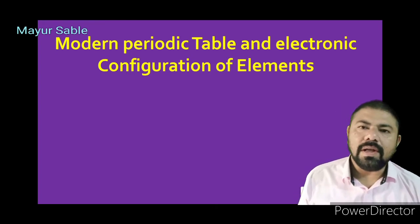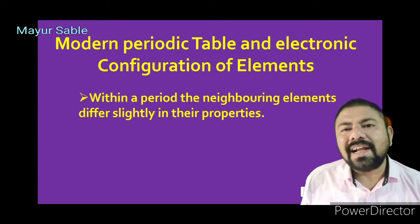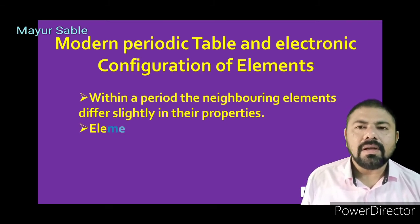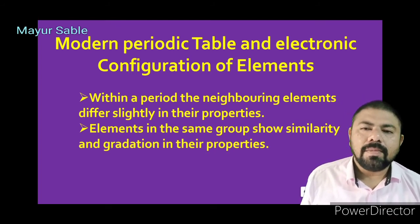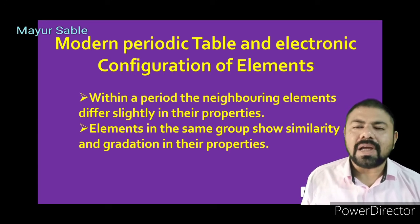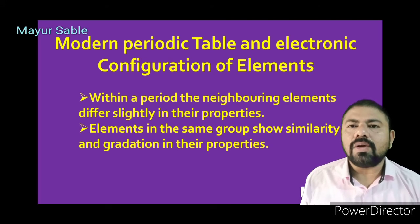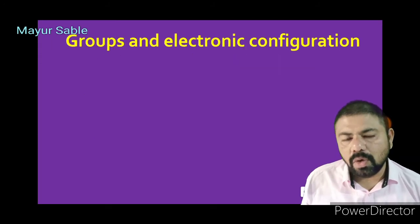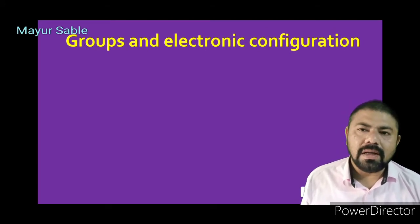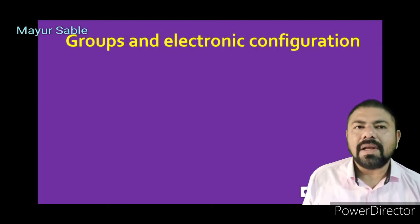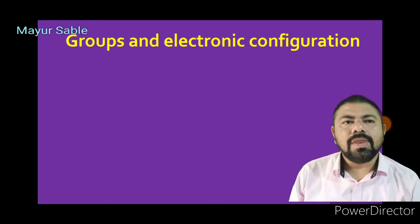Now we will study the modern periodic table and the electronic configuration of elements. Within a period, neighboring elements differ slightly in properties, while distant elements differ most. Elements in the same group show similarity and gradation in their properties. These characteristics of groups and periods are due to the electronic configuration of elements — it is the electronic configuration that decides the group and period in which an element is placed.